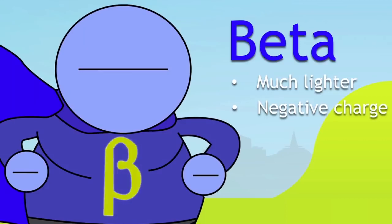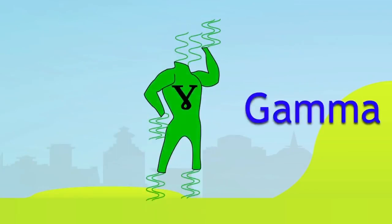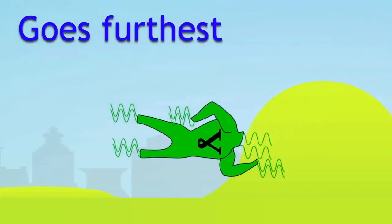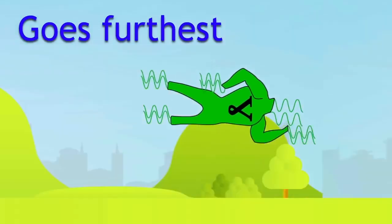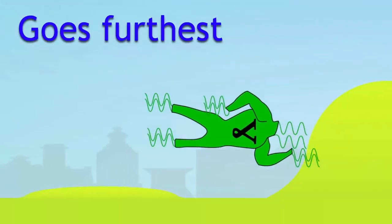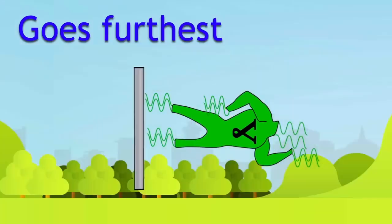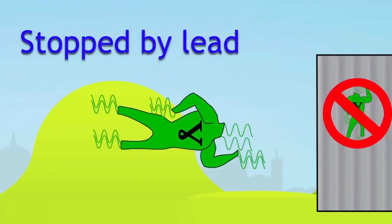This is the symbol for beta radiation. The most penetrating of the types of radiation is gamma radiation. Gamma radiation goes furthest in air. It goes a long way in air. And also, it goes through aluminum, but it will get stopped by lead.